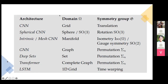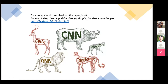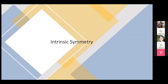Here is a summary of all the neural network architectures, their corresponding domains, and their corresponding symmetry groups — all from that book. This provides a very general guideline on how to design neural networks depending on the domain you're working with. That concludes the first part of the presentation.